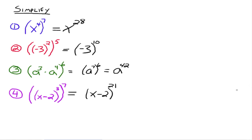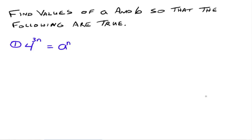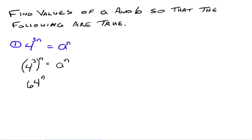Now let's try going backwards — find values of a and b so that the following are true. We have 4 to the 3n, and we want to rewrite that as some number raised to the n power. 4 to the 3n can be rewritten as 4 to the 3rd, all of that raised to the n power — using that property in reverse, since 4 to the 3rd all raised to n equals 4 to the 3n. And 4 to the 3rd is 64. So this becomes 64 to the n equals a to the n, meaning a has to equal 64.